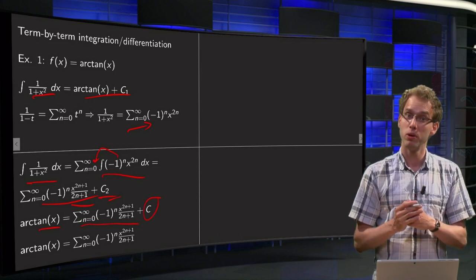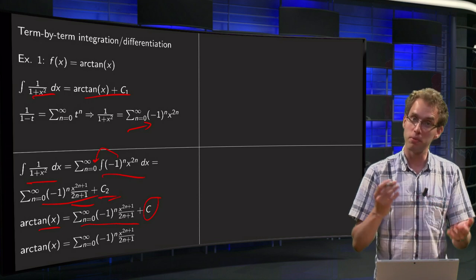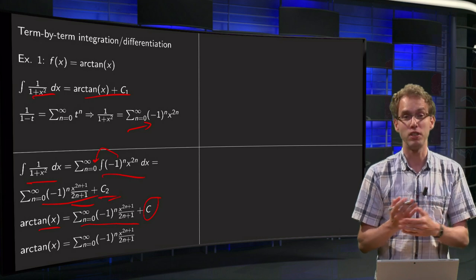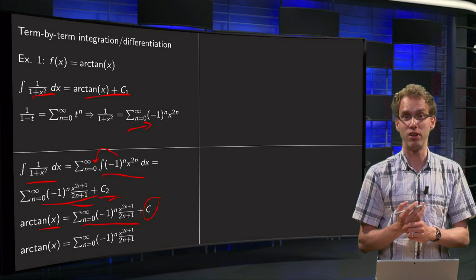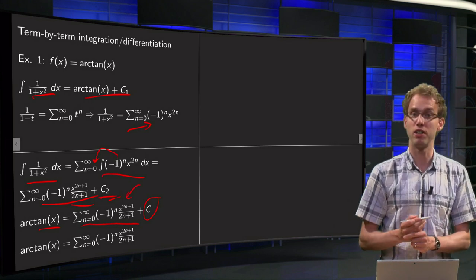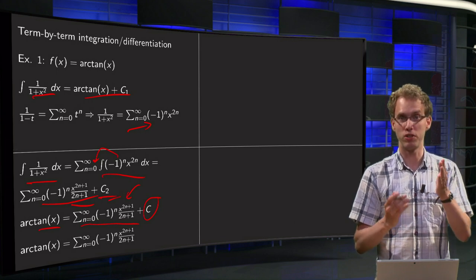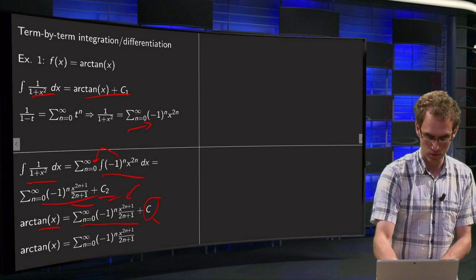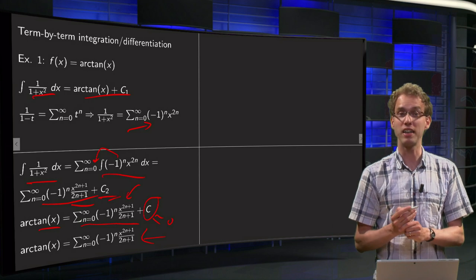How do we determine what the constant c is? The function has to equal the power series for all x inside the interval of convergence. Plugging in x equals 0: arctan(0) equals 0, and if you plug in 0 over there, you get 0 to the power 2n plus 1, which is 0 every time, so you get 0 equals 0 plus c, meaning c equals 0. And there we have our power series of arctan(x).